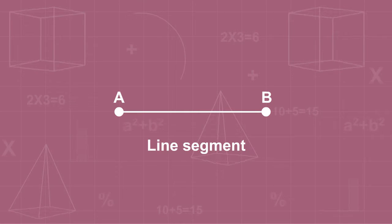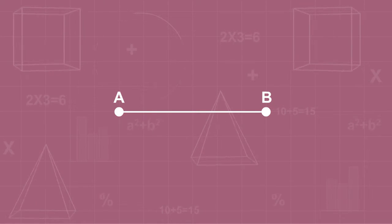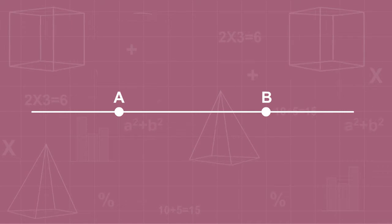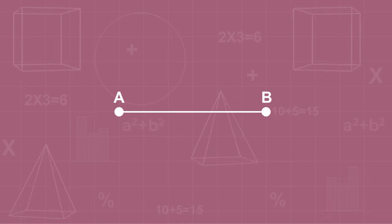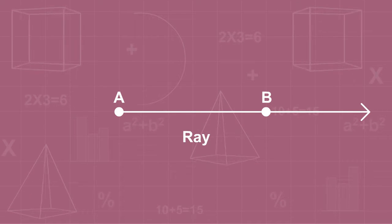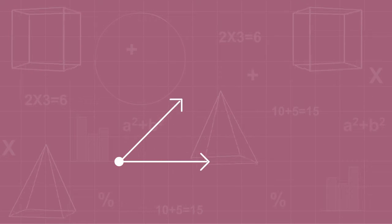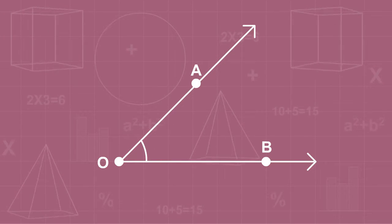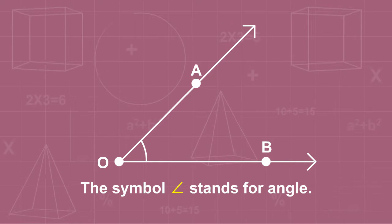A and B are endpoints. A line segment extended endlessly on both sides is called a line. A line segment extended endlessly in one direction is called a ray. Two rays having a common endpoint form an angle.